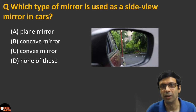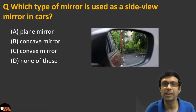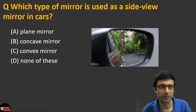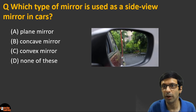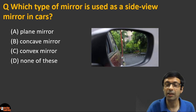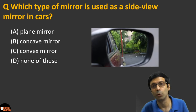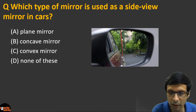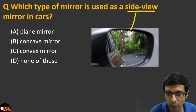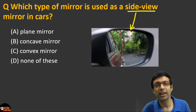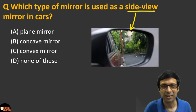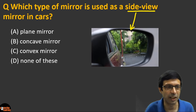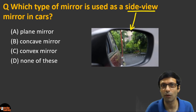Next question: which type of mirror is used as a side view mirror in cars? A side view mirror is the mirror on the side of the car. Is it (a) a plane mirror, (b) a concave mirror, (c) a convex mirror, or (d) none of these?